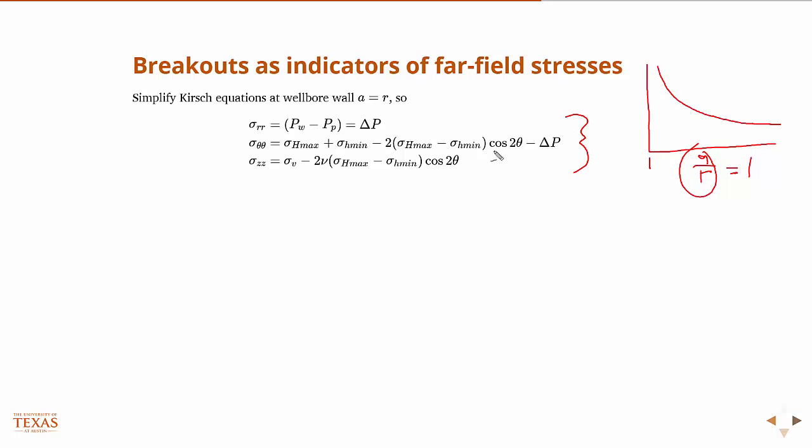Well then, now we have this cosine 2θ. Theta is the distance around the wellbore. So theta is going to be minimal. So what we want here is really the max and min values of the hoop stress.